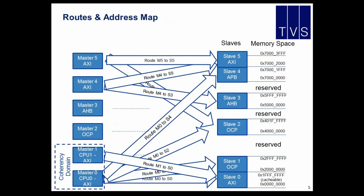What I mean by routes on the address map is making sure that each master can actually send transactions to all the different slaves, so we need to generate transactions going there. We need to be sure that the min and max of each address segment are covered properly. If you use formal verification, you may cover the entire address space. If you use UVM, you will probably reach the min and max of each segment plus a few random addresses. From different masters, you may reach different slaves, and you may have different mappings for different masters, so you need to cover all of this.